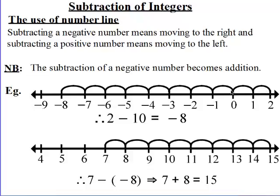1, 2, 3, 4, 5, 6, 7, 8, 9, and 10. So it falls on minus 8 to show that 2 minus 10 is equal to minus 8.